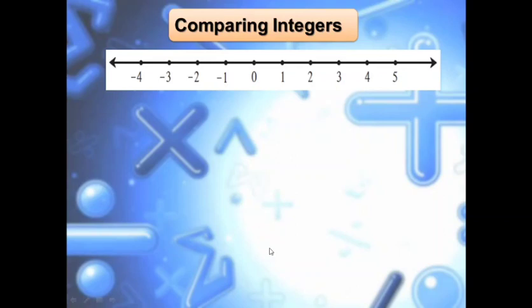We have already come up with this concept of comparison in our lower standards, where we learn greater than, less than, equal to — not only that, but big, small, tall, short and all these things. These are nothing but comparisons of things and numbers. So here we will be comparing integers — that is positive numbers, negative numbers, and 0 — with the help of the number line.